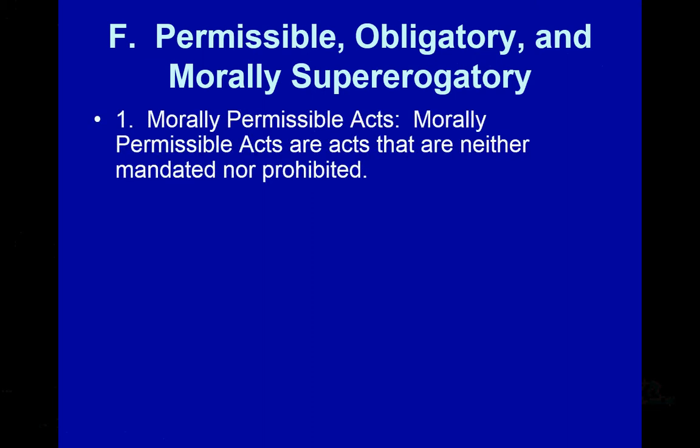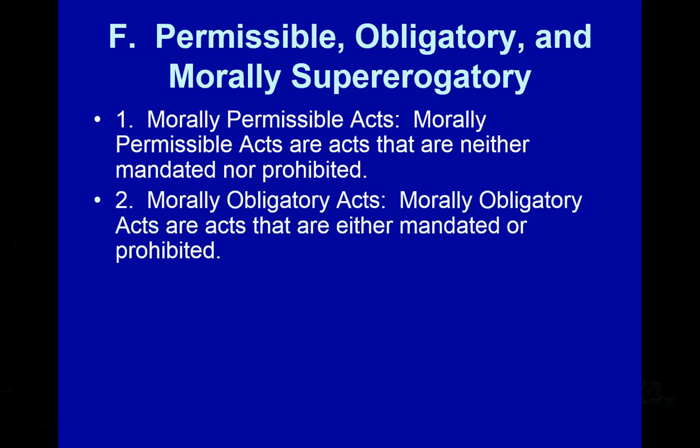Permissible, obligatory, and morally supererogatory — these are three different categories of particular actions. Morally permissible acts are acts that are neither mandated nor prohibited. For example, it is permissible to run or jog four days a week for good health — you're not mandated to do that, but it is morally permissible. Morally obligatory acts are acts that are either mandated or prohibited. For example, the Ten Commandments: thou shalt not murder. That is a morally obligatory act — we are morally obliged not to murder an innocent human being. Thou shalt not steal — we are morally obliged not to take our neighbor's property.